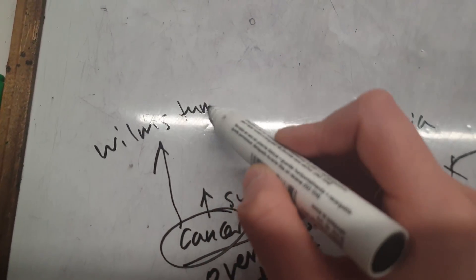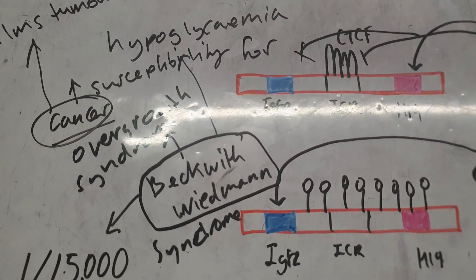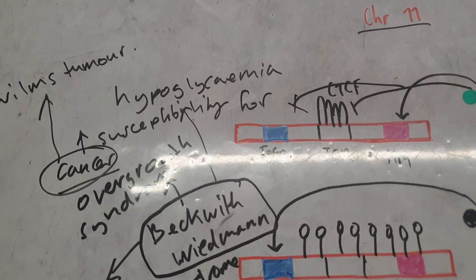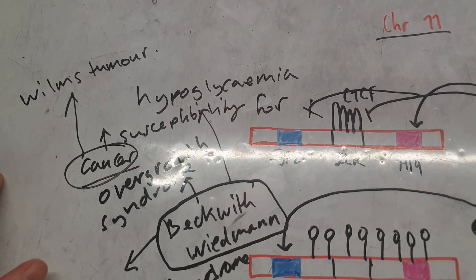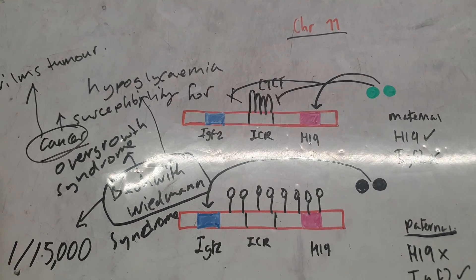These Wilms tumors are found on top of the kidneys. If they're detected early on in children, they can be quite easily removed. So that's everything I wanted to tell you about chromosome 11 imprinting.